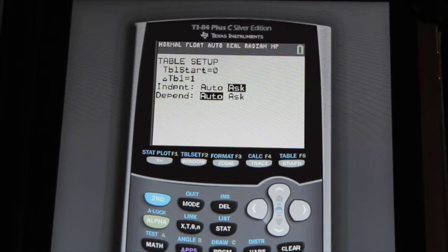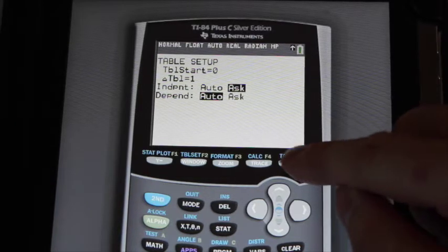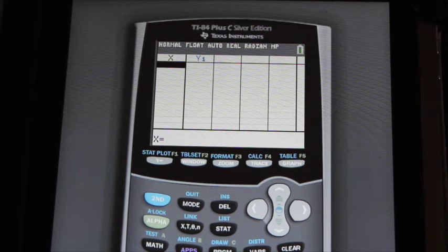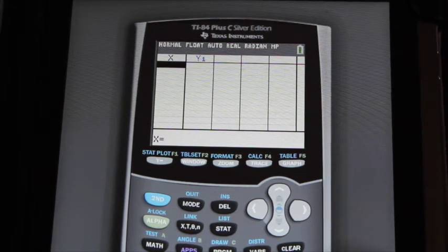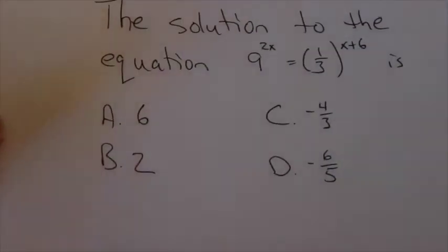Now what that does is set the calculator up so that when you go 2nd graph to get into the table of values, you get a blank screen. That might look like a step backwards, but actually that's a good thing because the calculator is waiting for me to provide it with the x values.